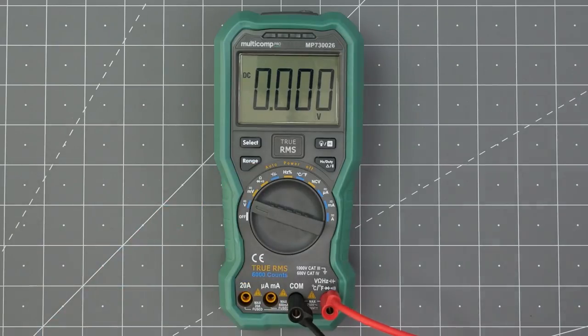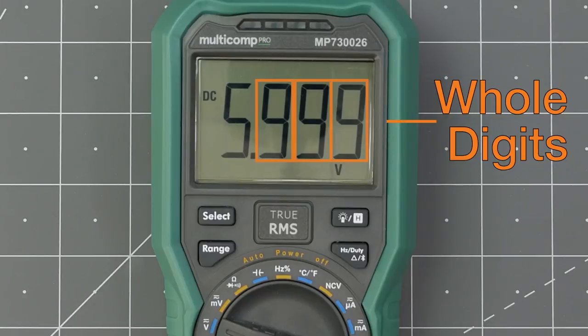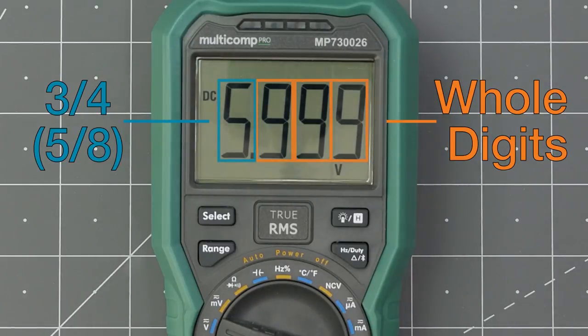Using this 10-minute auto-ranging meter, I manually set it to the six-volt range. It has 3.75 digits, and in this range, the maximum it can display is 5.999 volts. The 999 is the three whole digits, and the 5 is the three-quarter or five-eighths digit.